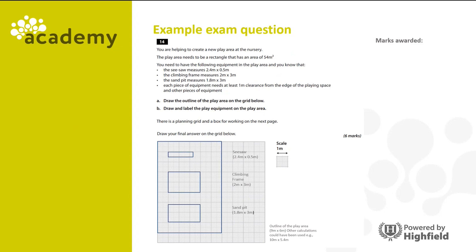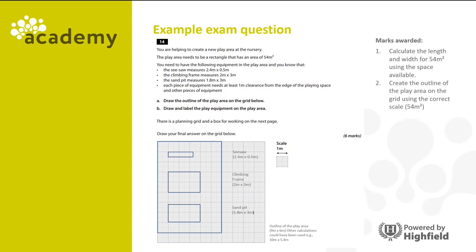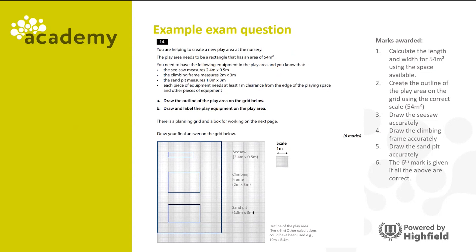Did you get it right? There are 6 marks for this answer. You get a mark for calculating the length and width for 54 meters squared using the space available, a mark for creating the outline of the play area on the grid using the correct scale, a mark each for drawing the seesaw, climbing frame, and sandpit accurately, and finally the sixth mark is given if all of the above are correct.